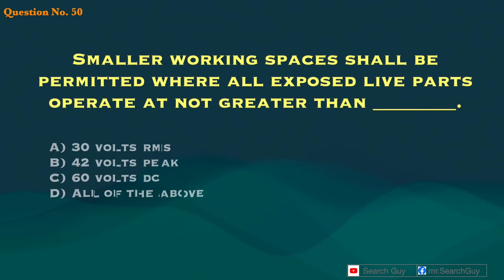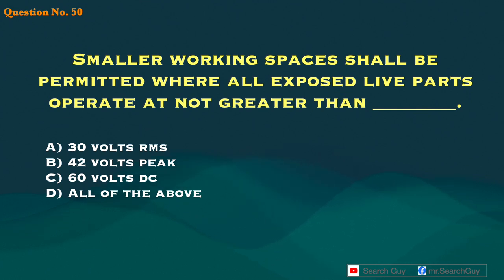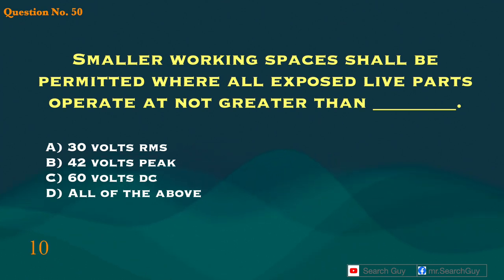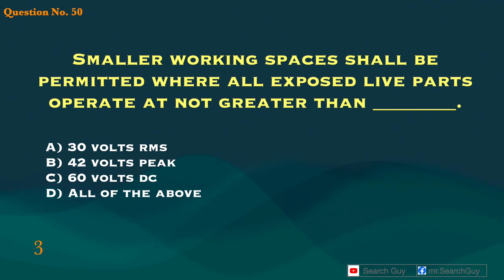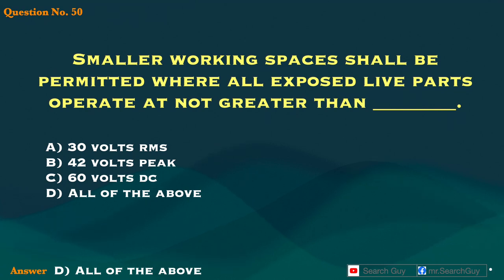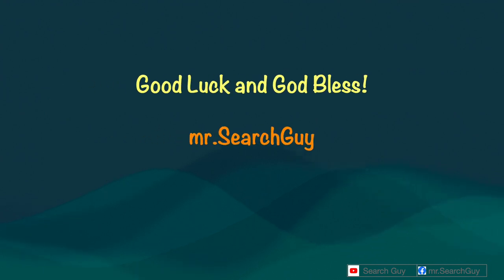Question 50. Smaller working spaces shall be permitted where all exposed live parts operate at not greater than blank. A. 30 volts RMS. B. 42 volts peak. C. 60 volts DC. D. All of the above. Answer: D. All of the above. Good luck and God bless.